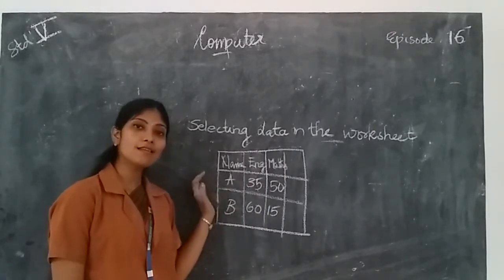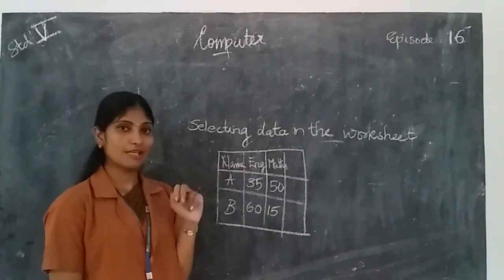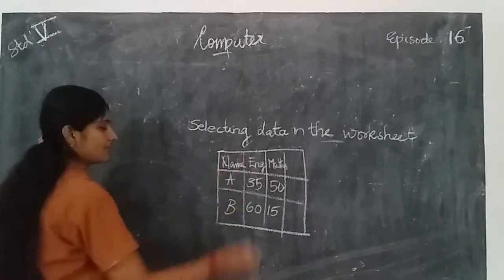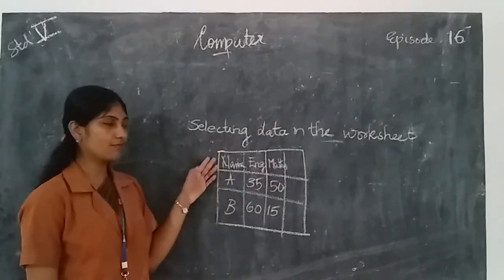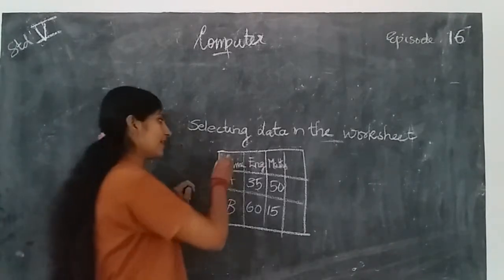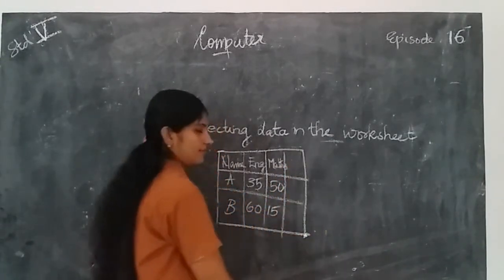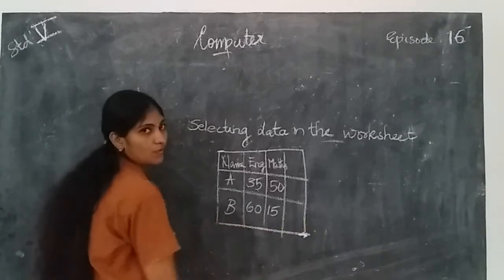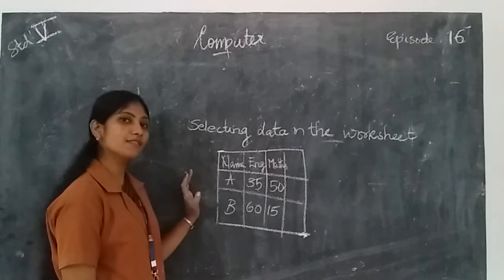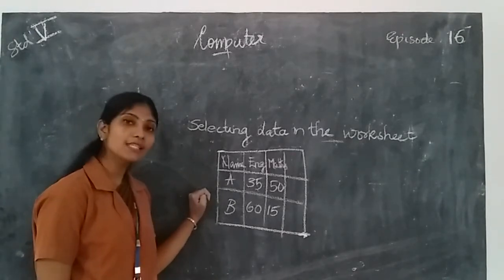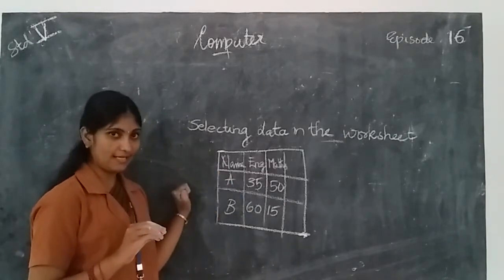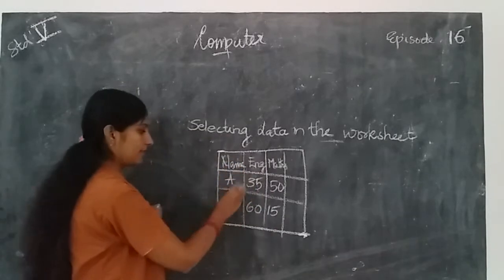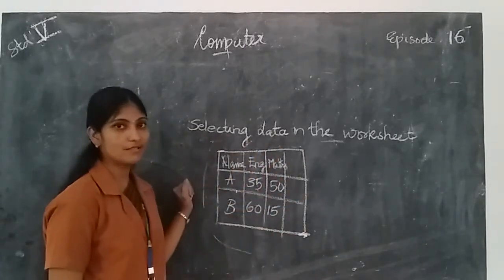There are two ways to select data. The first way is to click on the upper-left end of the cell range and drag it to the lower-right portion of the cell. That means we click here and drag to the end of the worksheet, and we can select the whole range of cells. That is one way.